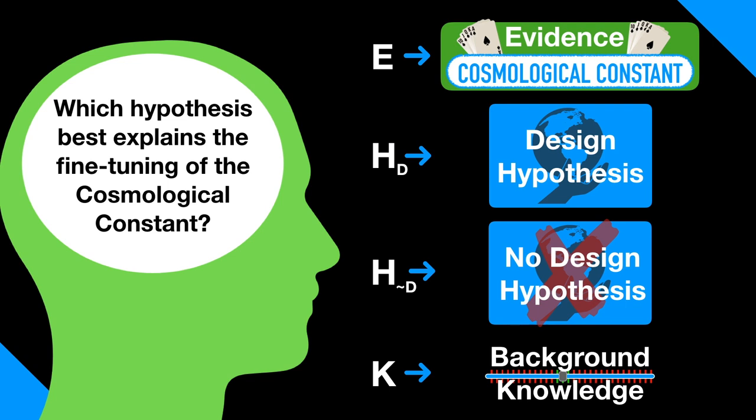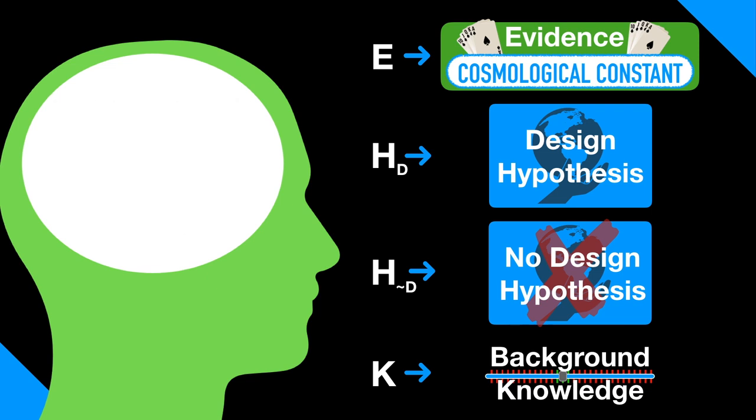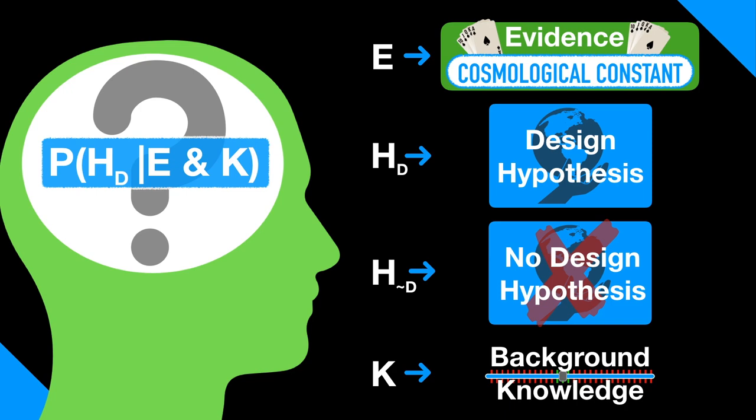And let K represent our relevant background knowledge, that the cosmological constant could have fallen within a very wide range of values, at least 10 to the 53rd wider than the life-permitting range. What we're interested in is the probability of the hypothesis, HD, given our evidence, E, and the relevant background knowledge, K.